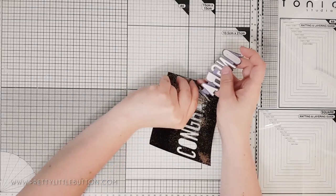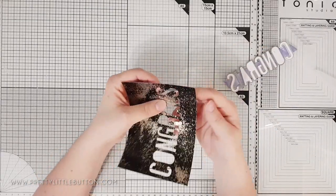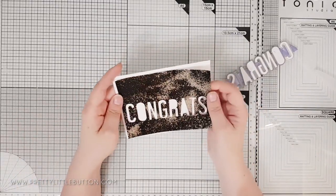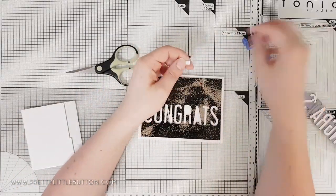Once I've run this through my die cutting machine, I'm removing the letters but making sure that I keep the inners of the letters, for example in the A's and the O's.